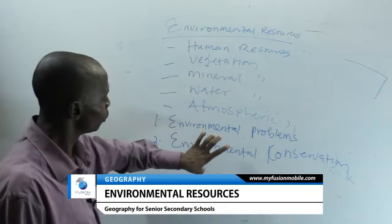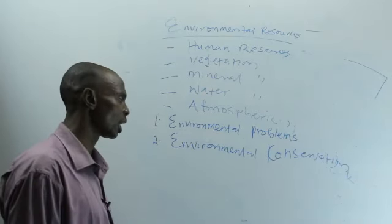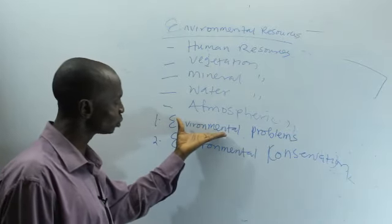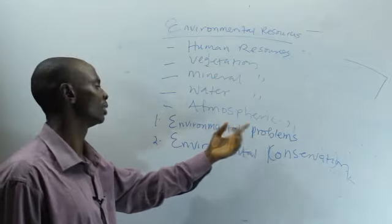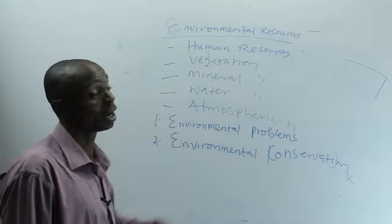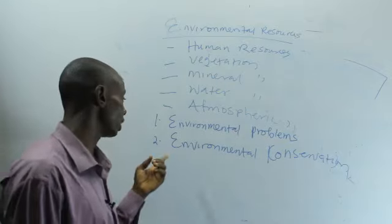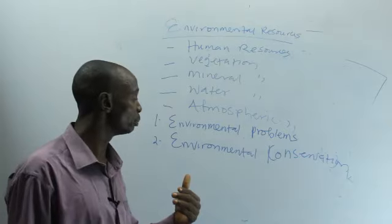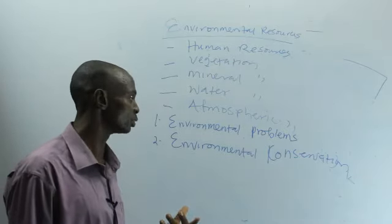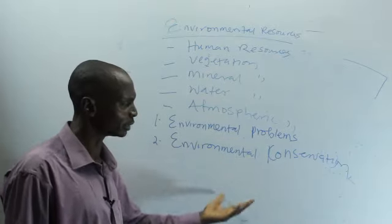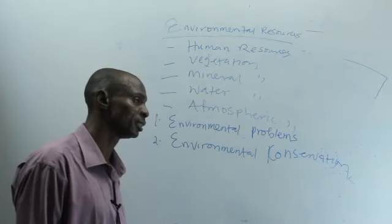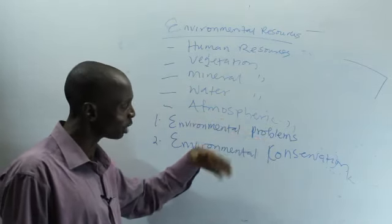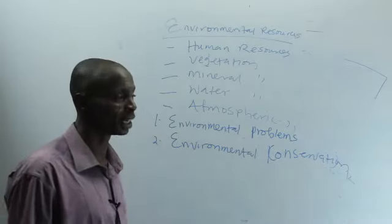Then, we look at environmental conservation. How can we conserve environment? It's the same issue. Trying to solve the problem of environment, you are conserving. And that is the doctrine of environmental sustainability. How to sustain environment for the people, for the future generation, to come and meet it. So, what do you do? There are ways you can conserve the environment. It's the same way you solve the environmental problems now. You can use the same method to conserve the environment.